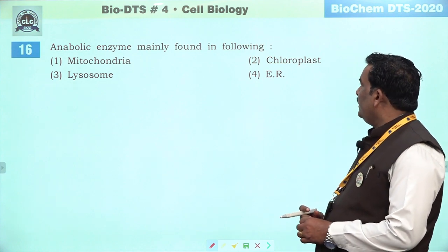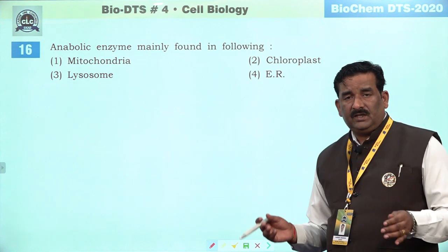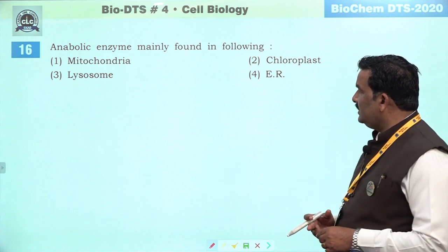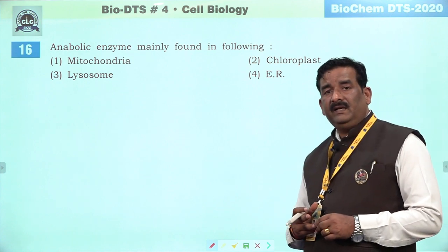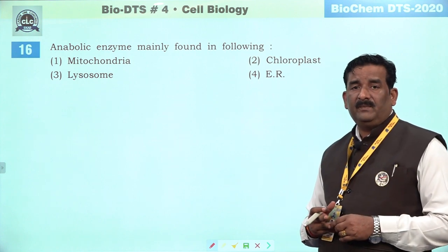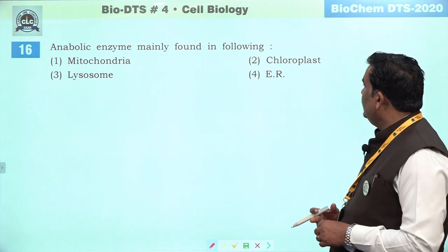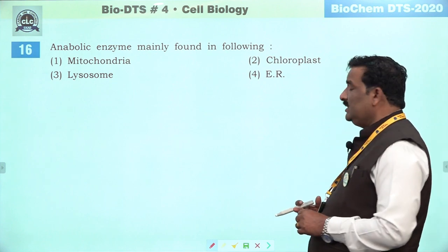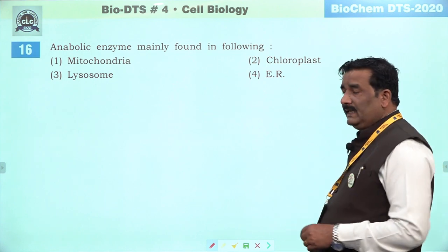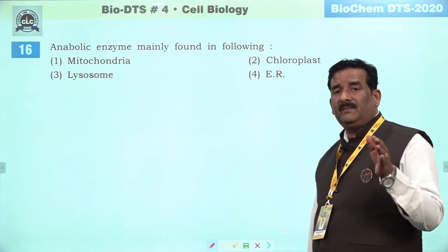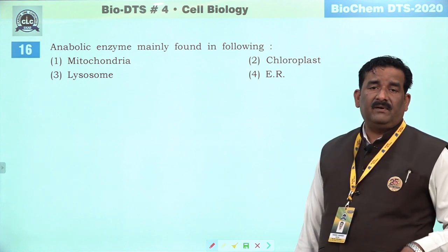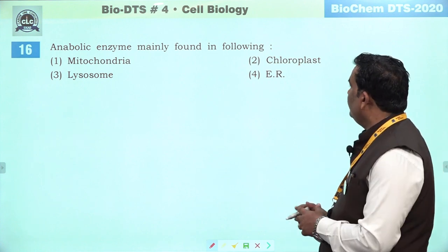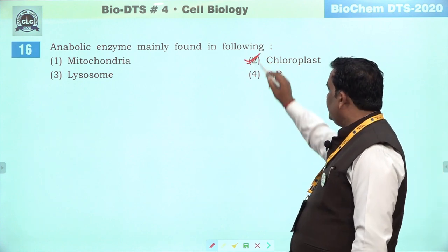Next question: anabolic enzyme mainly found in following. Yeh dono questions aapas mein relate karti hain. Anabolic reactions are mainly forming reactions — they are performed inside the chloroplast. Iska matlab hai ki anabolic enzyme bhi zyada tar majority mein chloroplast mein hi paaye jaate hain. Ek aur baat — hydrolytic enzyme mainly found in — uske liye answer ham lysosome ko banaate hain. Second is the right answer.